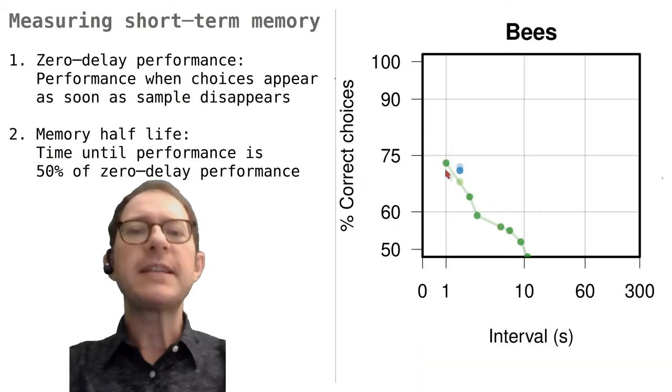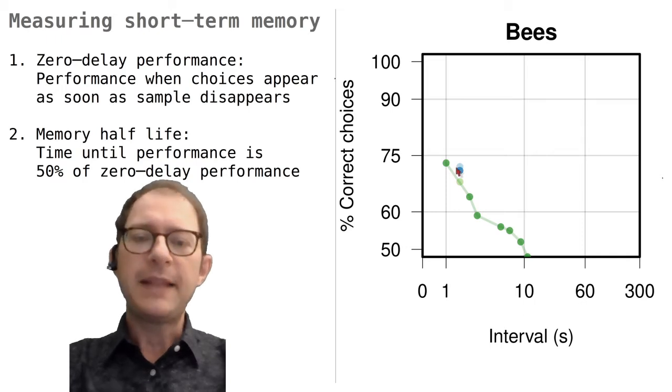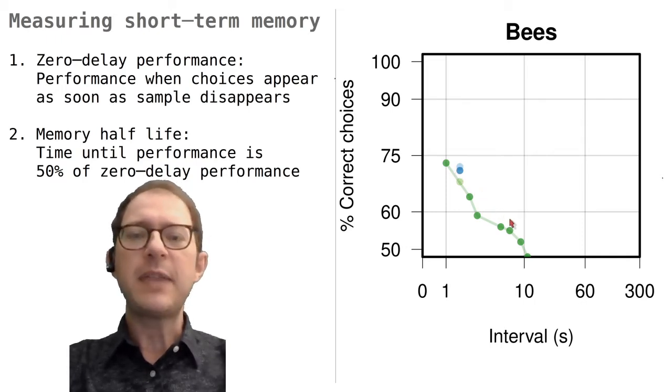For example, here are some results from bees. There was no zero delay condition in the experiments that we found, but at one second delay the bees chose correctly about 75% of the time. Maybe it would have been 80% or something like that at zero delay. If they were choosing randomly, they would have scored around 50% since there were only two choices. So 75% is quite a bit above chance, but not perfect. At this point we increase the delay interval and see how the animals do. What happened with the bees is that they got progressively worse as the delay increased. This is the typical result.